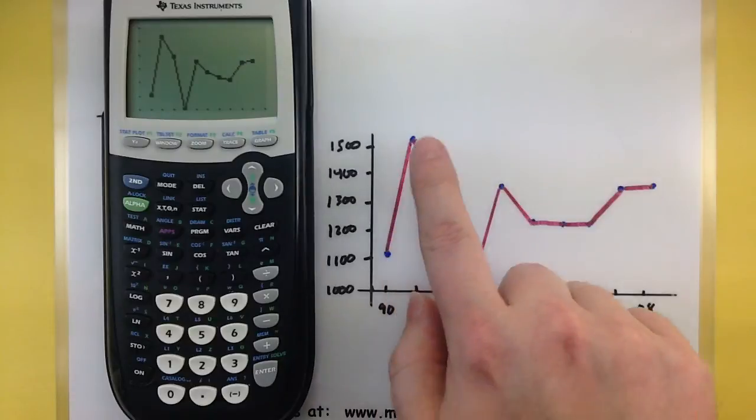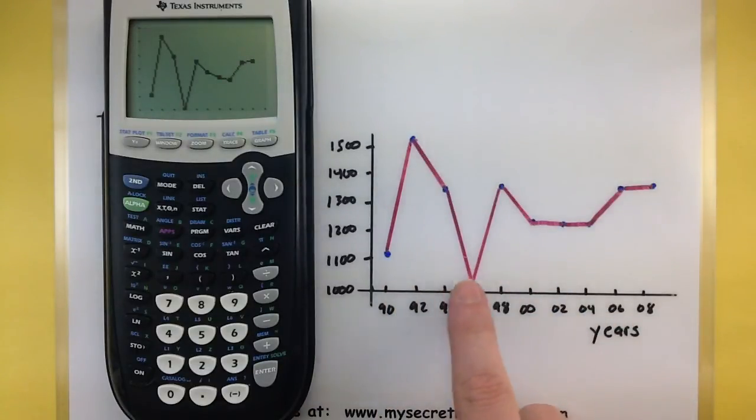All right everything's looking good. We can see that peak at the very beginning, that dip down below for 1996 and a few other data values after that.